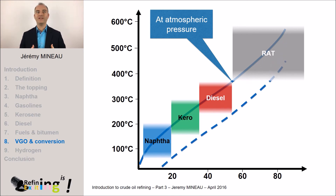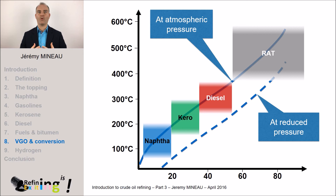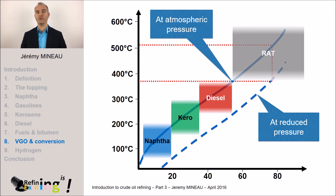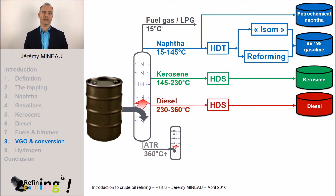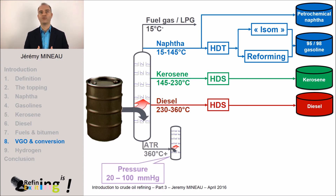If we do the same experiment — heating up the crude oil — it will be much easier to vaporize the molecules. At 380 degrees under reduced pressure, we manage to vaporize molecules which would require a temperature of 500 to 580 degrees C at atmospheric pressure. We reproduce this reduced pressure at industrial scale, generally ensured by steam ejectors. We heat up the atmospheric residue to 380 to 400 degrees C under vacuum at about 20 to 100 millimeters of mercury. The atmospheric pressure is about 760 millimeters of mercury, so this represents approximately one-tenth of the atmospheric pressure, or 100 millibars.